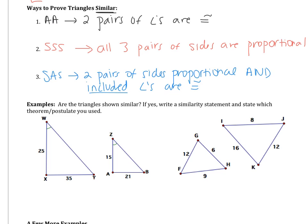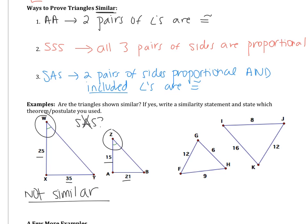In examples one and two, it asks: are the triangles shown similar? If yes, write a similarity statement and state which theorem you used. Looking at the first example, I have two pairs of sides and I have the angles, so it looks like I might be using SAS. But I do not have the included angles, so I can't use SAS. I can't use SSS because I don't have all three pairs of sides, and I can't use AA because I don't have two pairs of angles. So these triangles are not similar — it's possible they could be, but we cannot prove them similar.